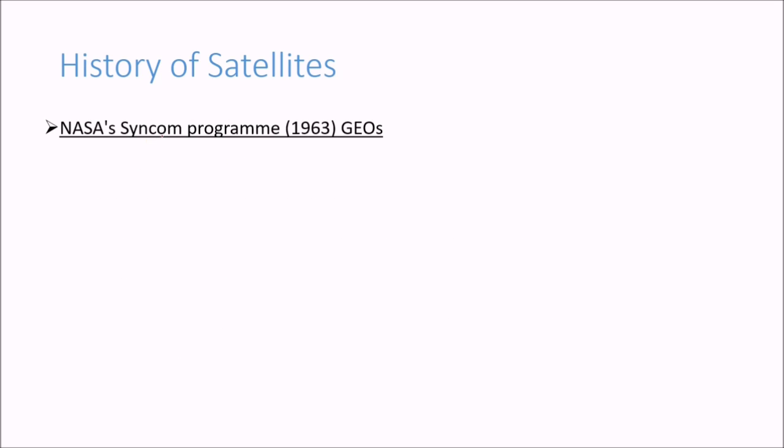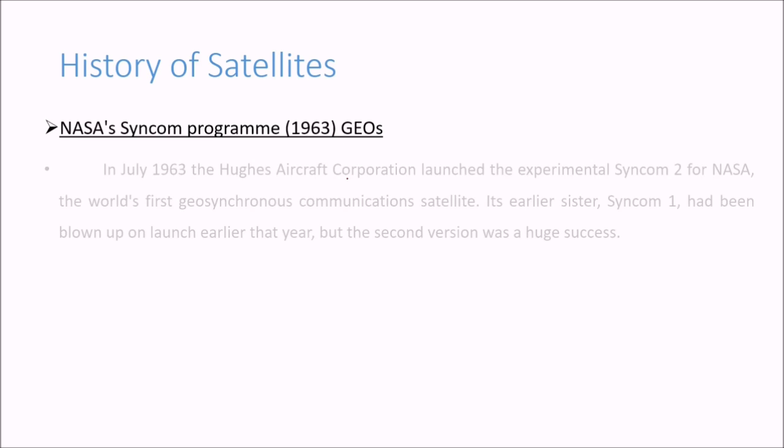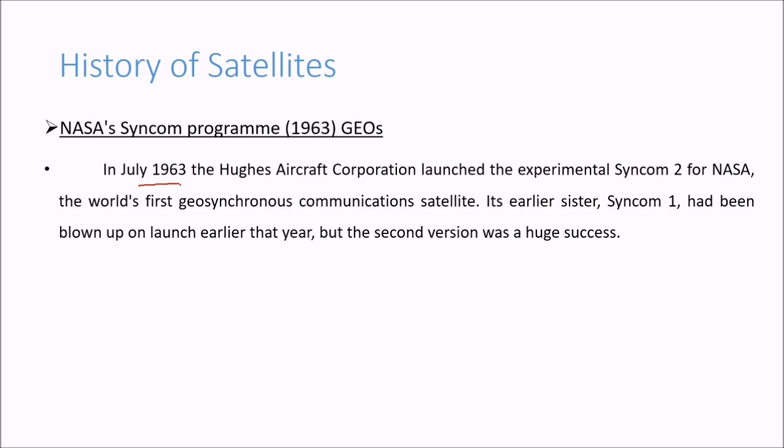Then NASA's Syncom program 1963, GEOs. In July 1963, the Hughes Aircraft Corporation launched the experimental Syncom 2 for NASA, the world's first geosynchronous communication satellite. The earlier sister, Syncom 1, had been blown up on launch early in that year, but the second version was a success.